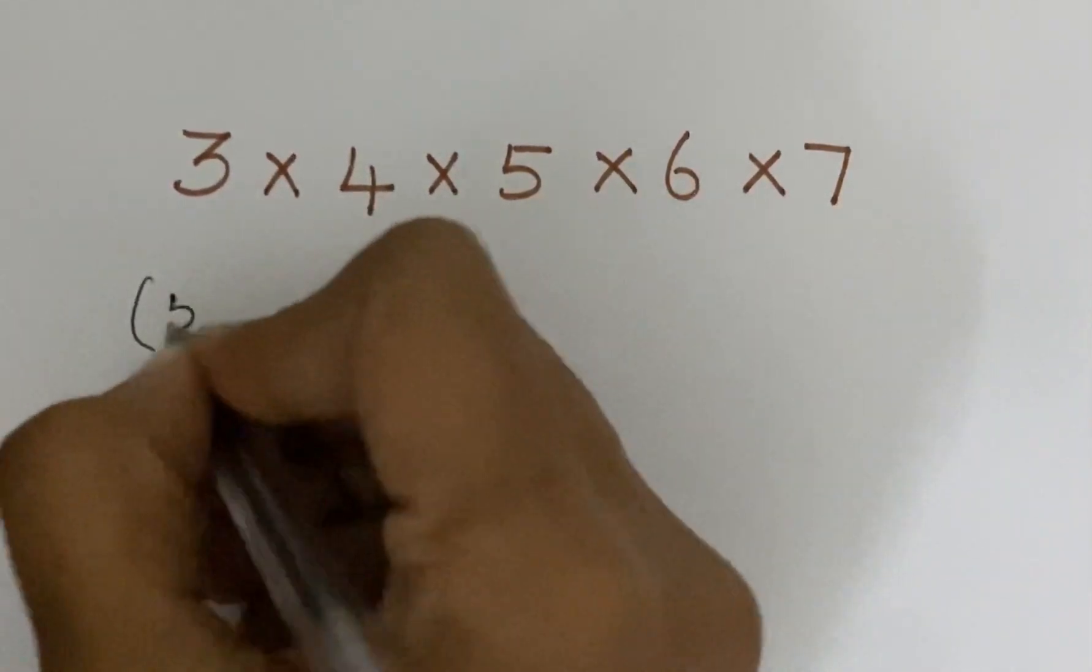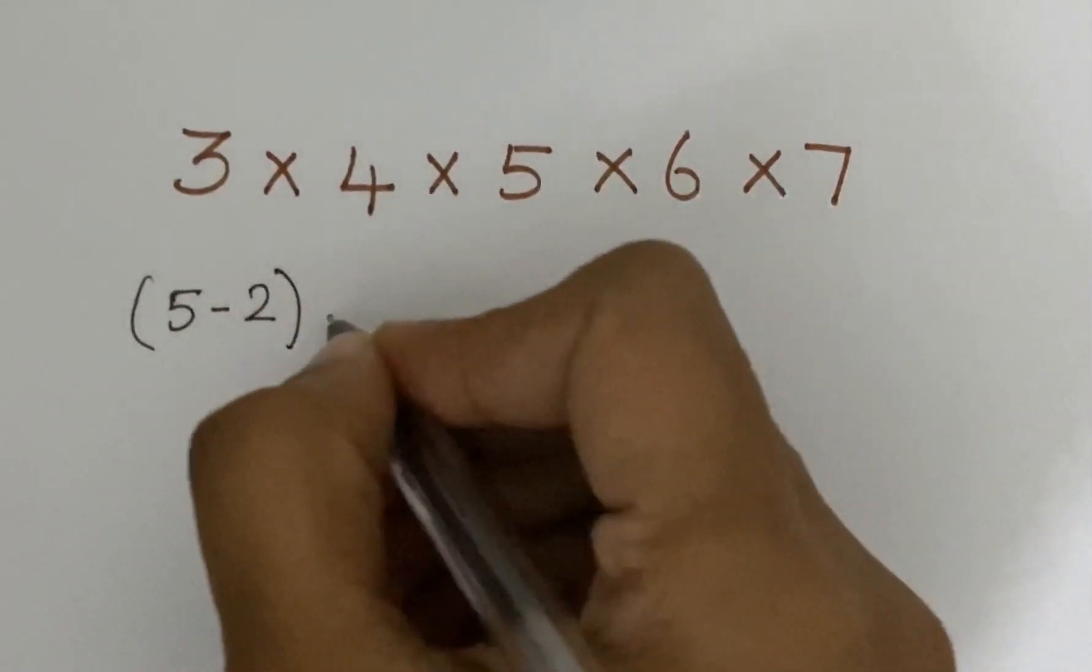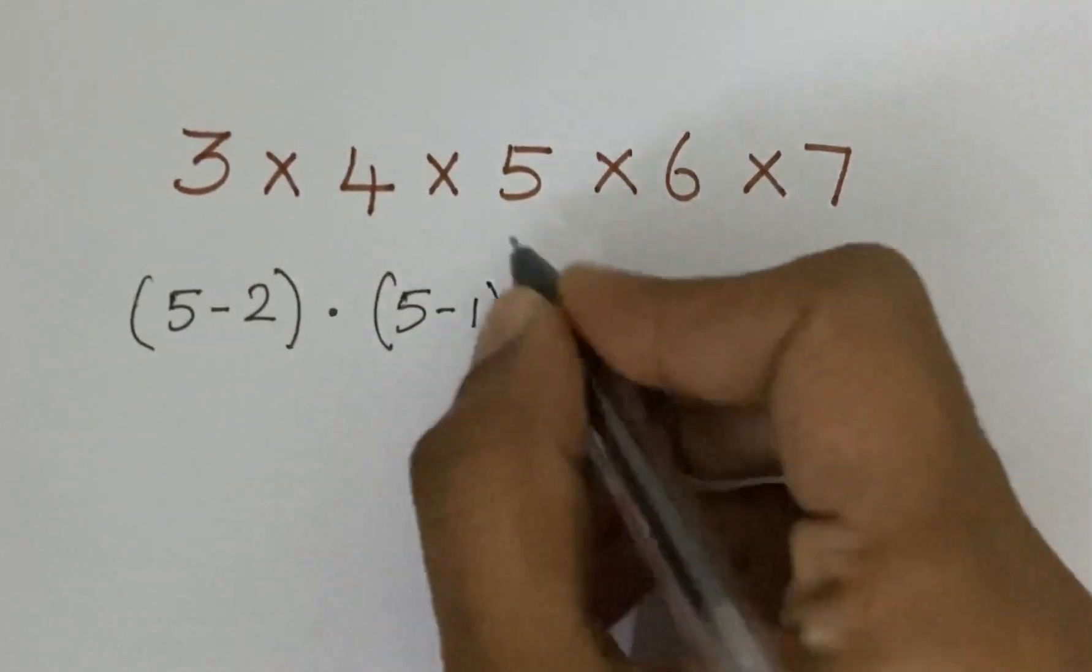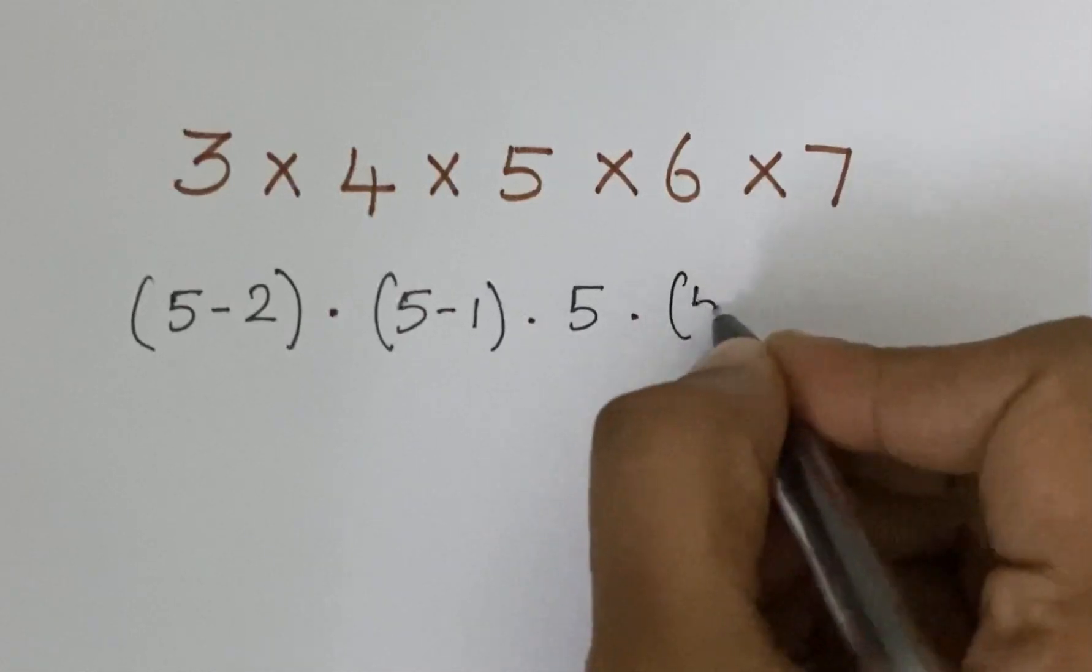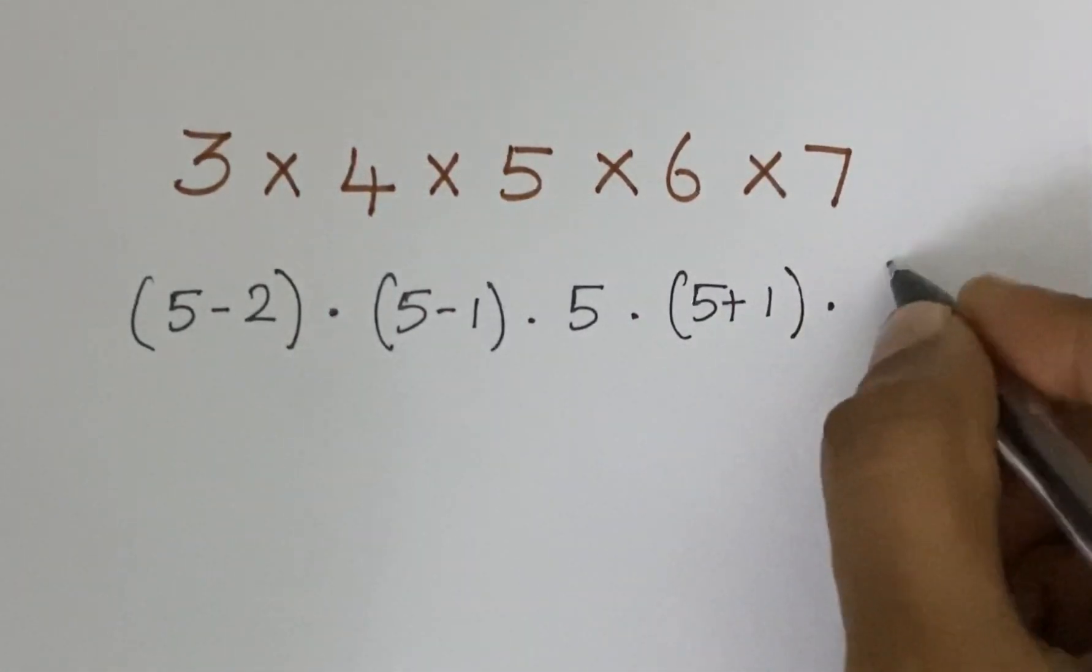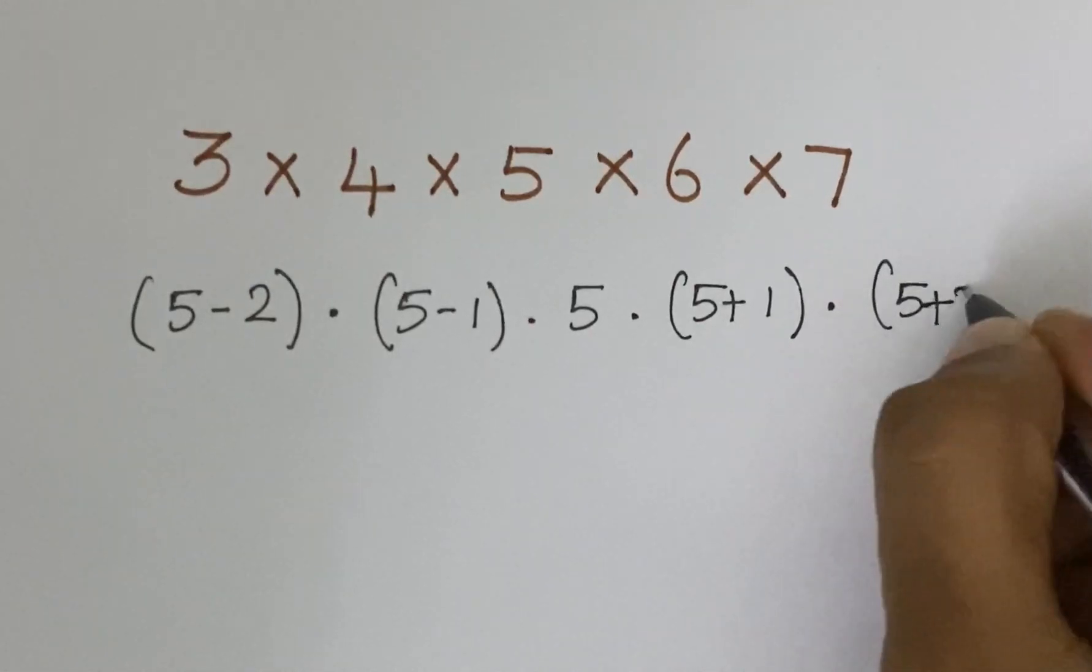Here 3 can be written as 5 minus 2, 4 can be written as 5 minus 1, then we have 5, 6 can be written as 5 plus 1, and 7 is 5 plus 2.